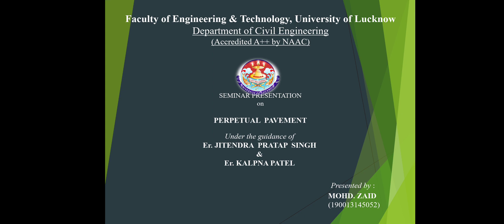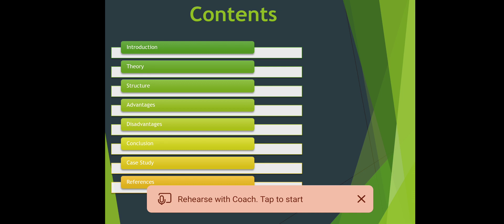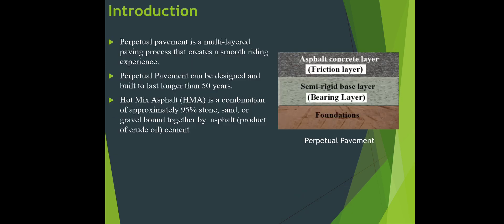These are the contents: introduction, theory, structure, advantages, disadvantages, conclusion, case study, and references. Introduction: perpetual pavement is a multi-layer paving process that creates a smooth riding experience. Perpetual pavement can be designed and built to last longer than 15 years. Hot mixed asphalt is a combination of approximately 95% stone, sand, or gravel bound together by asphalt, a product of crude oil and cement.